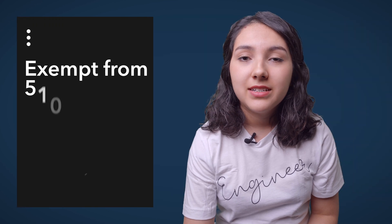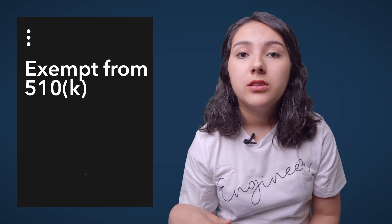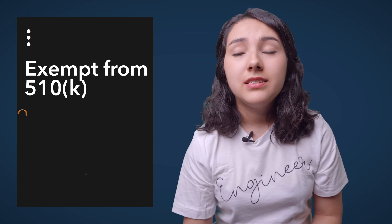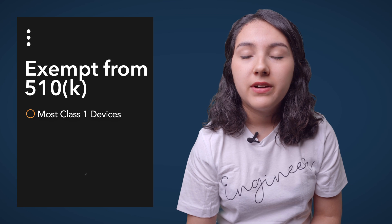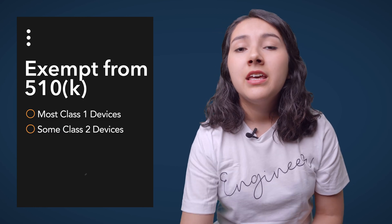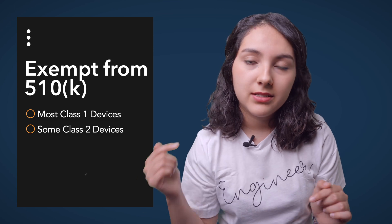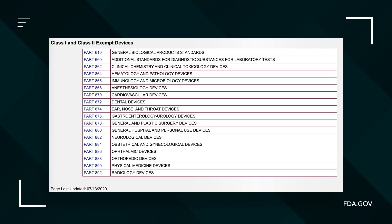There are actually a number of devices that are exempt from having to get a pre-market notification or submitting to the FDA. These include most class 1 medical devices and some class 2 medical devices. There is a list on the FDA website — FDA.gov — of the class 1 and 2 devices that are exempt from having to get any sort of approval or clearance before going to market. However, even though you don't necessarily need approval or clearance, you do need to register your company and provide your classification of device or your intended classification on the FDA's website.